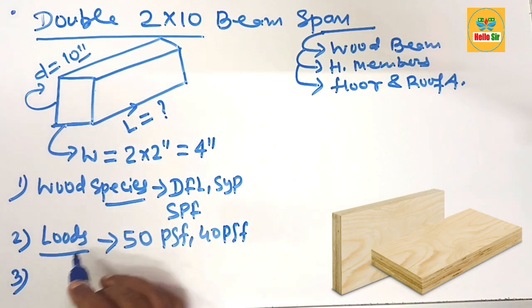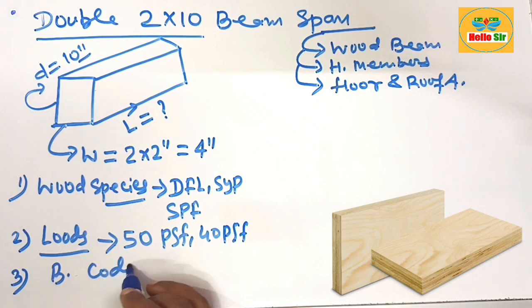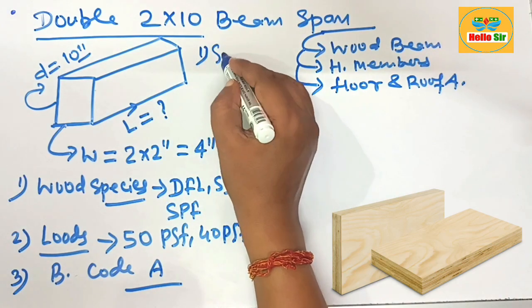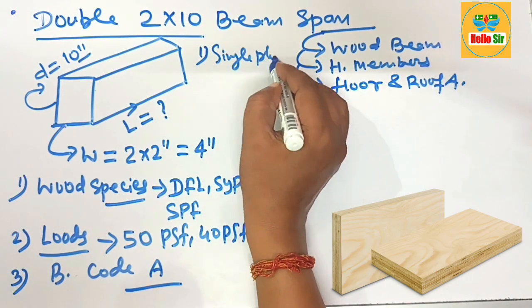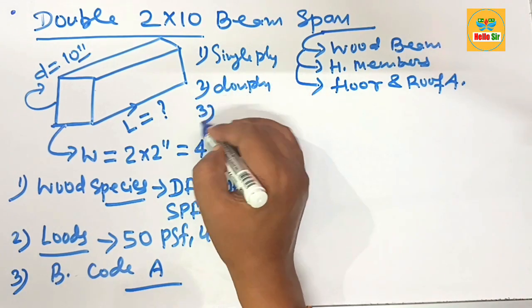And the third major factor that determines the span length is your building code in your area. And here the beam comes in single ply, double ply, and triple ply.